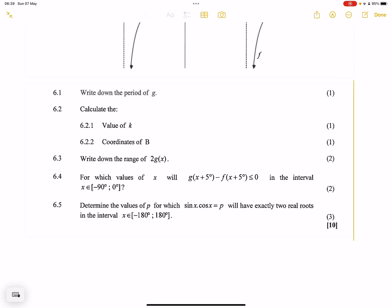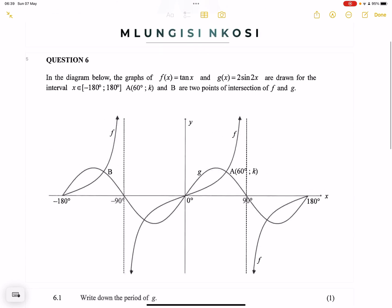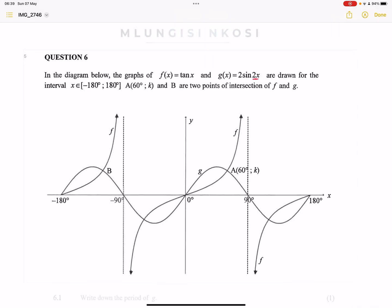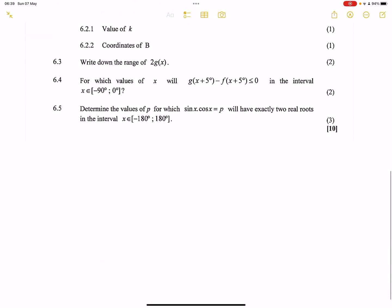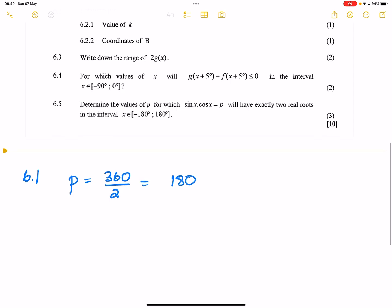They say write down the period of g. Now remember, whenever we take the period, we will look at what we call the frequency. So the period should always be 360 divided by the frequency. So that's our period in this case, will simply be 360 divided by the frequency and that gives us 180. So that's our period.